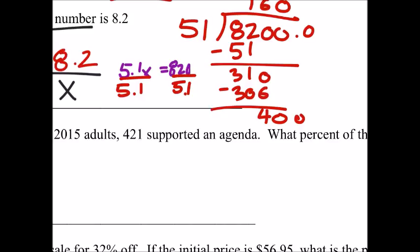400, not 8 times, 7 times. So 357. That gives us 43.